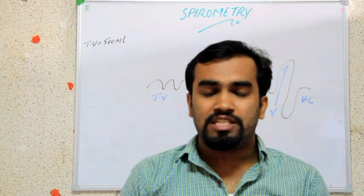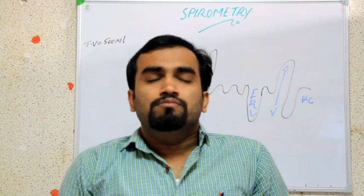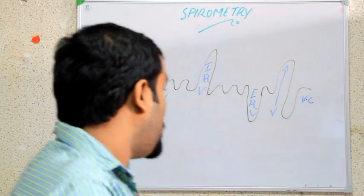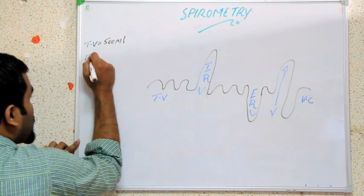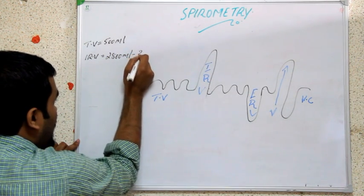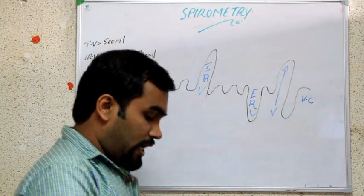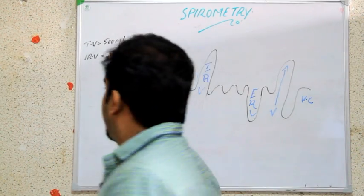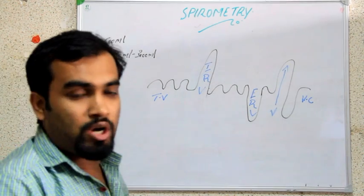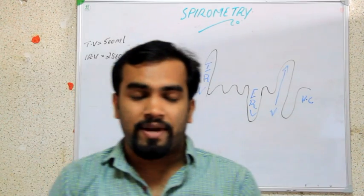The next volume is IRV, that is inspiratory reserve volume — more than normal inspiration, what we can breathe in forcefully. It is known as inspiratory reserve volume. We are finding this value using spirometry. The value for IRV is 2800 ml to 3000 ml. Just remember inspiratory reserve volume equals 2800 ml to 3000 ml, or 2.8 liter to 3 liter.